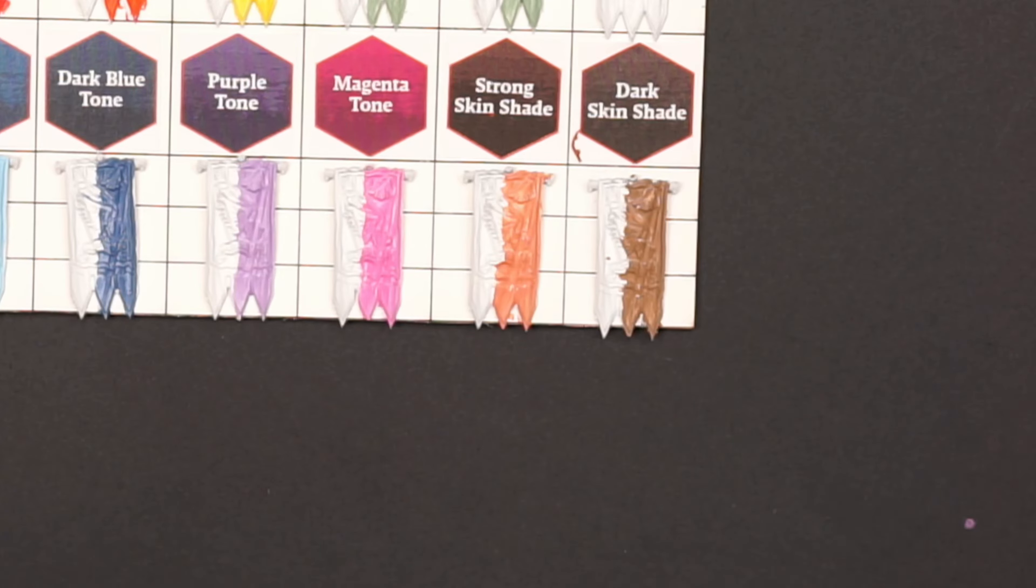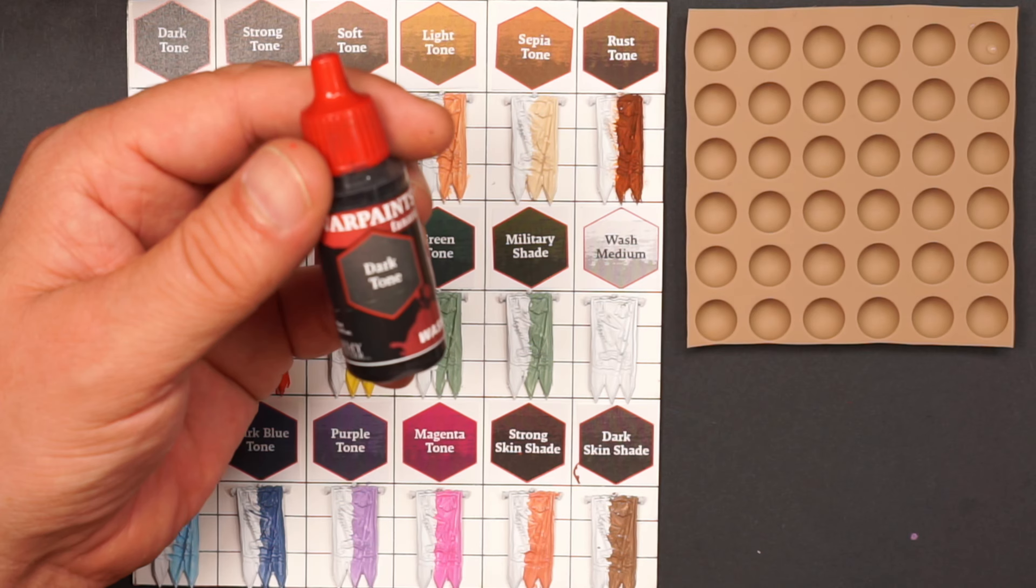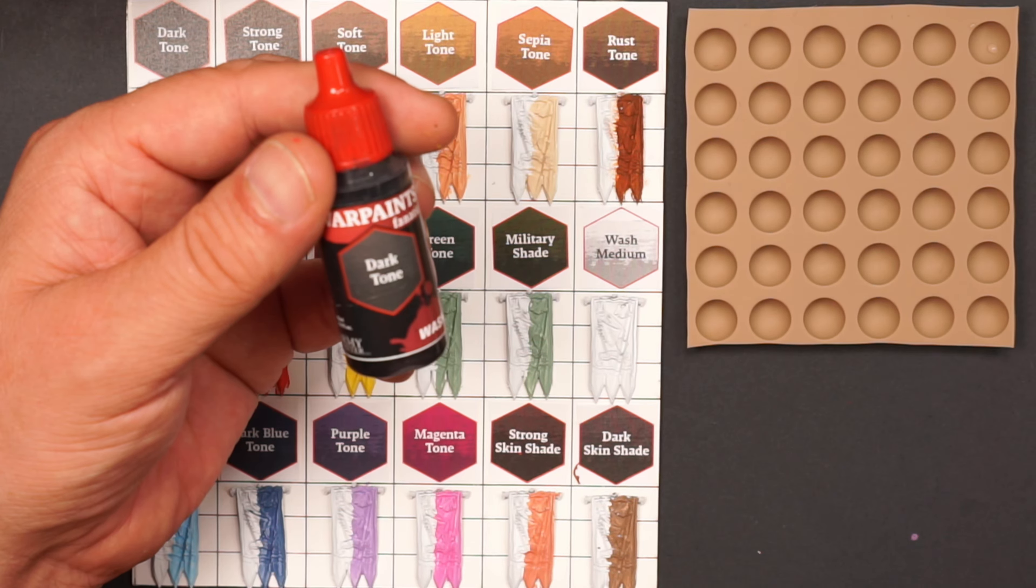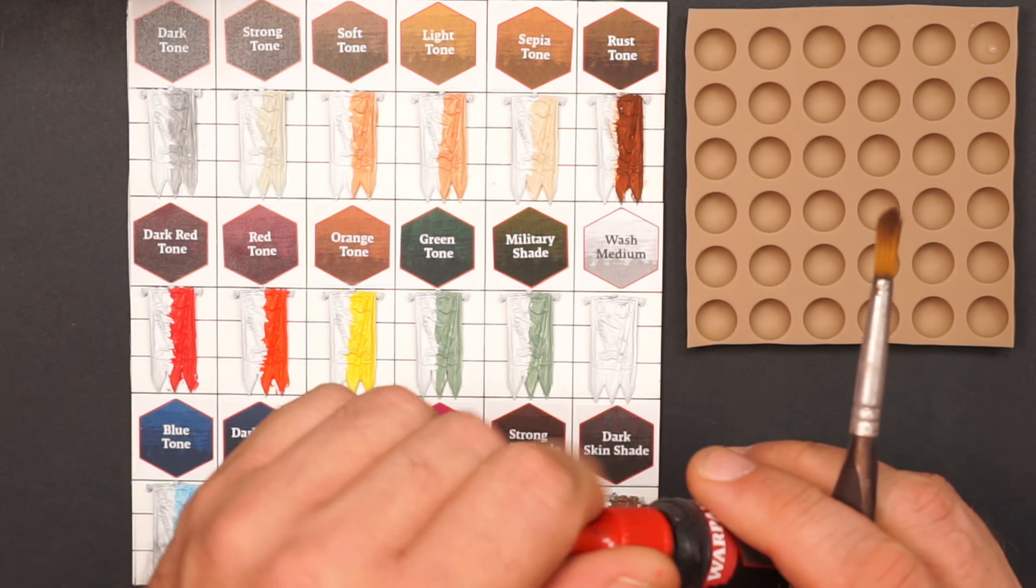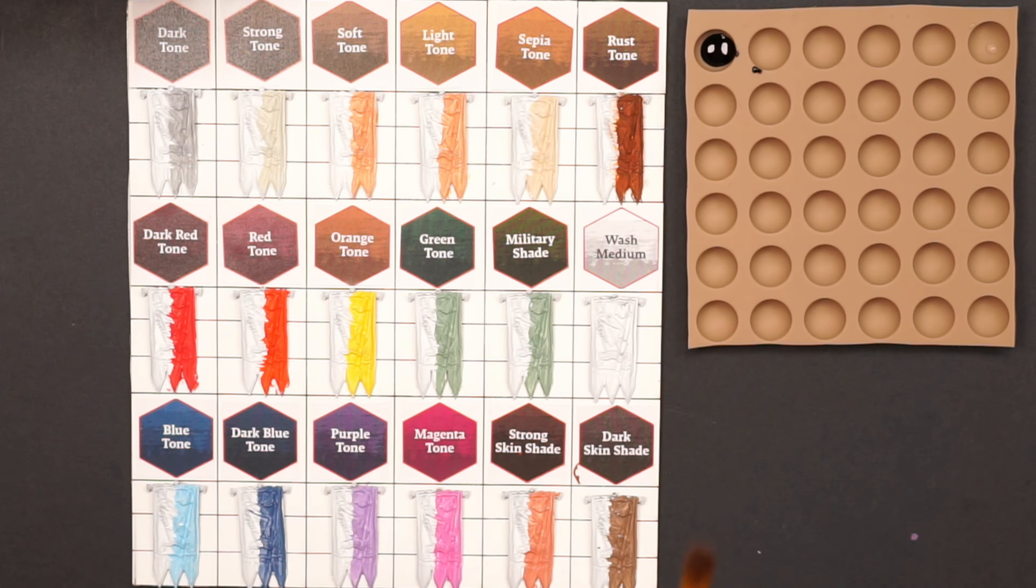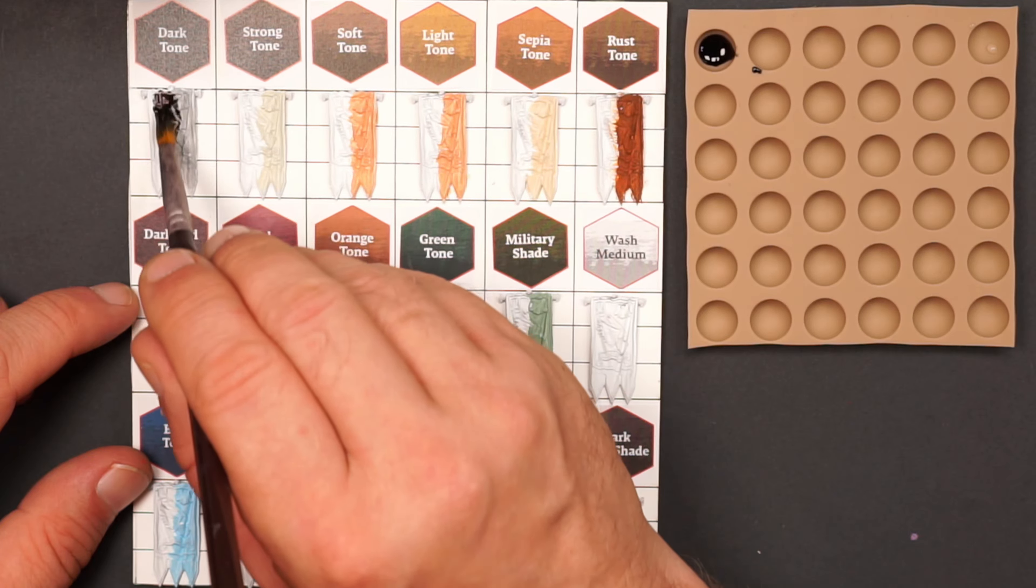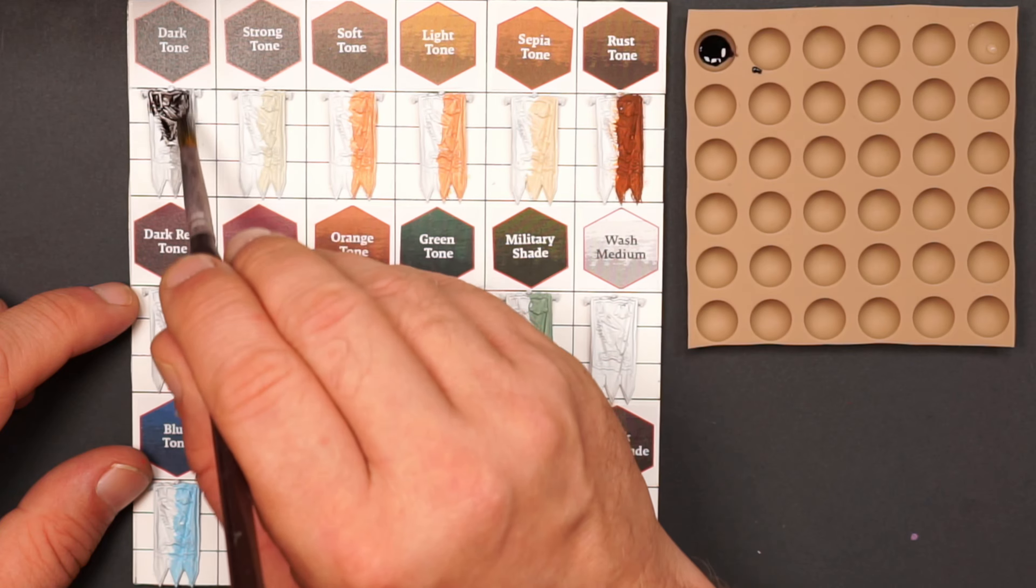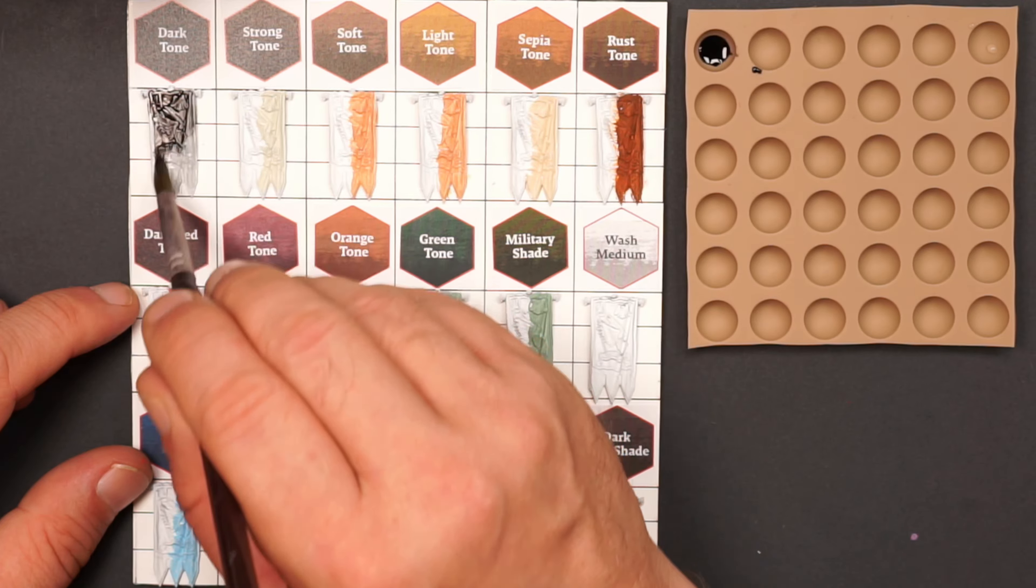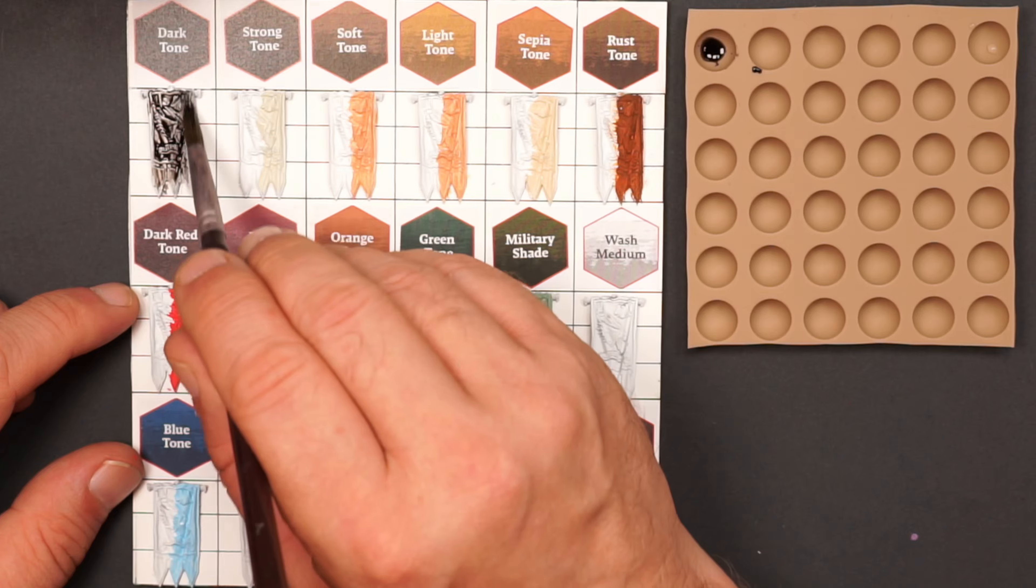But let's have a look at the washes themselves. First, I'll start with the dark tone. This is the wash I use the most. It is getting very close to the Nuln Oil and it has the same properties, so I use this a lot on miniatures and terrain. All the washes have a pretty good consistency, they flow the same, and it's just the color that is different on all of them.